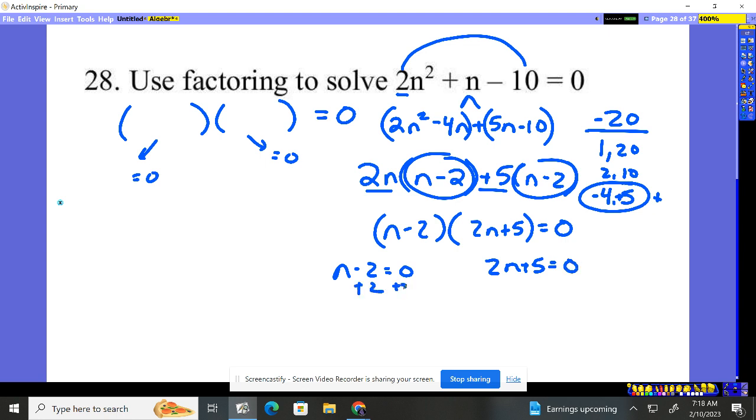Add 2, add 2. n = 2 is one solution. Minus 5, minus 5. 2n = -5. Divide by 2.